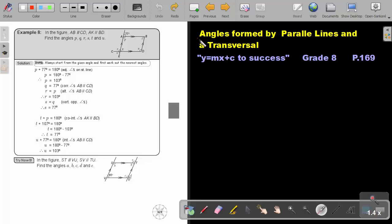Part 7. Let's continue with angles formed by parallel lines and a transversal. You will find this on page 169 in the Namibia Mathematics Grade 8 textbook, Y equals MX plus C to success.